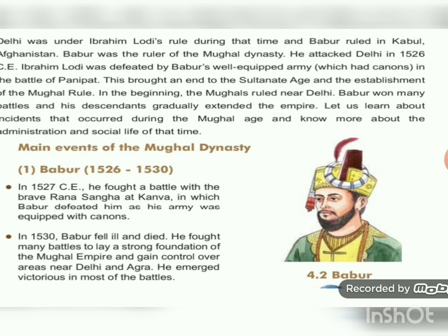Ibrahim Lodi was the last ruler of the Lodi dynasty in India. This period was also known as the Sultanate Age. Lodi ruled from Delhi. At that time, Babar ruled over Kabul in Afghanistan — he was the ruler of the Mughal dynasty. To establish his rule in India, he attacked Delhi in 1526 CE. Ibrahim Lodi was defeated in the Battle of Panipat. This brought an end to the Sultanate Age in India, and Babar became the first ruler of the Mughal dynasty in India. Mughals ruled from Delhi, won many battles, and expanded their empire.